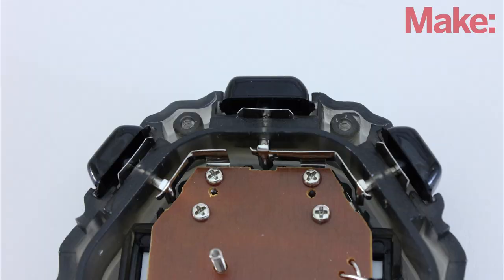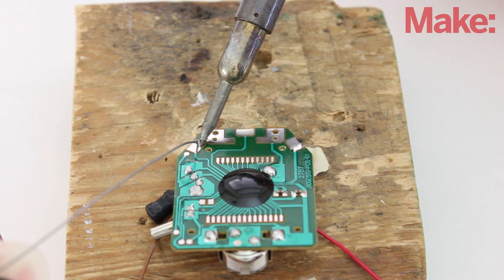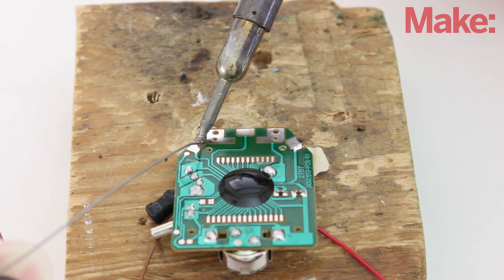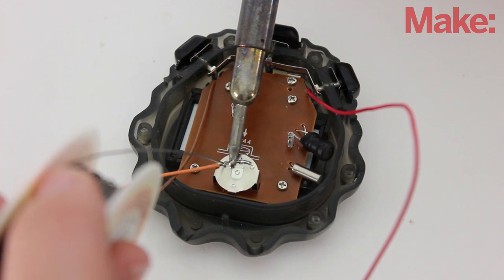Find the contacts on the board for each of the buttons. Solder a small extension wire onto the start-stop button and the reset button. Then remove the battery and solder one more wire onto the positive terminal of the battery pack.